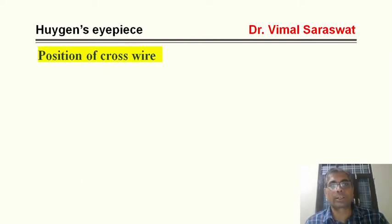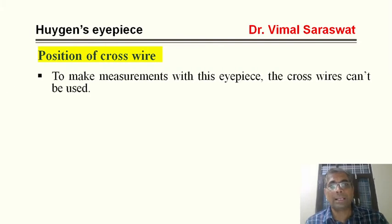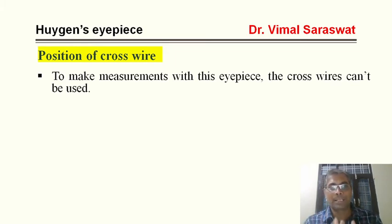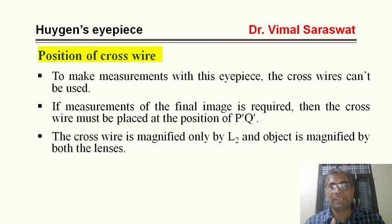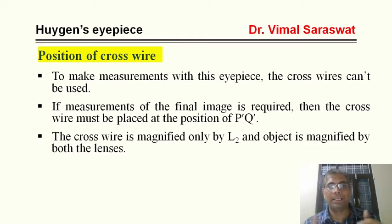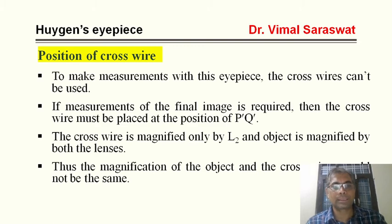Now, position of the cross wire. To make measurements with this eyepiece, the cross wires cannot be used directly. If measurements of the final image are required, the cross wire must be placed at the position of P'Q'. The cross wire is magnified only by L2, that is by the eye lens, while the object is magnified by both lenses — the eye lens as well as the field lens. Thus the magnification of the object and the cross wire will not be the same.